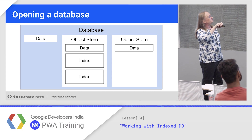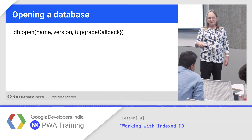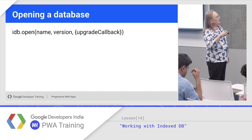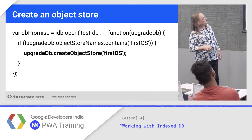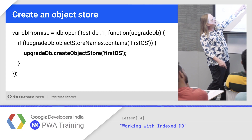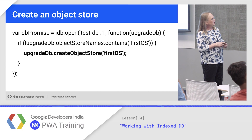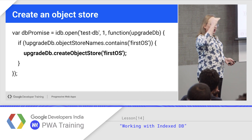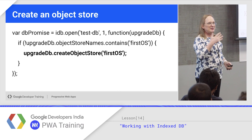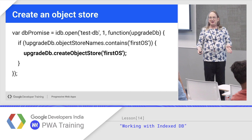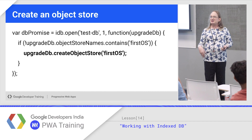To open the database, give it a name and a version number. That version number should increment any time you change the schema. Then you pass in a function called the upgrade callback. So we call idb.open, name it 'test database version one', and give it the upgrade database function as the callback. The database contains multiple object stores. This function's job, when you open the database, is to look at the structure and make any changes needed to make it current — that might mean creating new object stores.